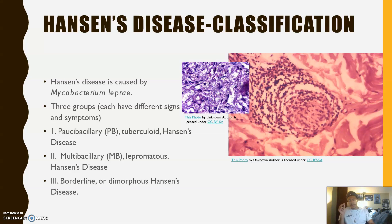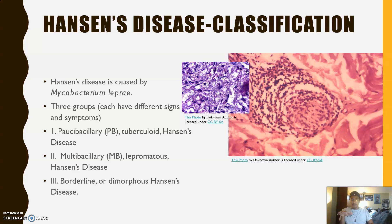The second one, multibacillary lepromatous Hansen's disease, involves generalized or diffused involvement of the skin and thickening of the nerves under microscopic examination — you can see these nerves thickening up because of this disease. It can potentially involve the bone, the eyes, testes, and nose as well.